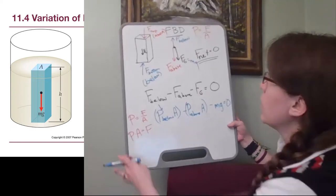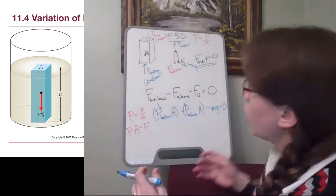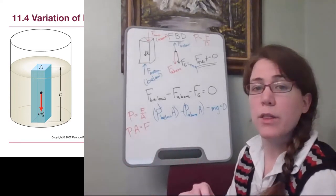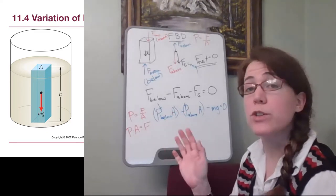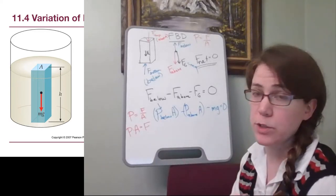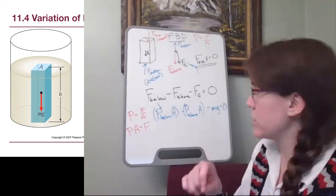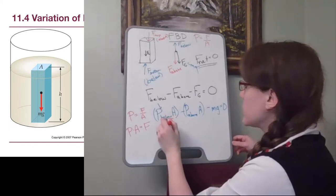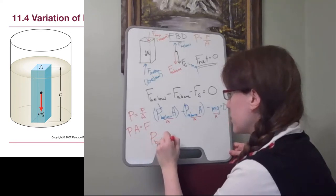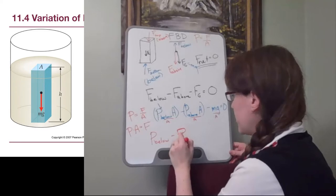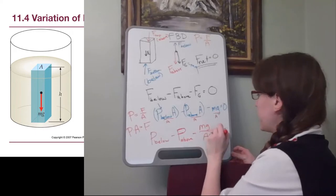Let's look at what we have here. We can simplify a couple of things. What I want us to think about is the fact that with these two terms having area, we could divide all of the terms by area. So we have pressure below minus pressure above minus mg over A equals zero.